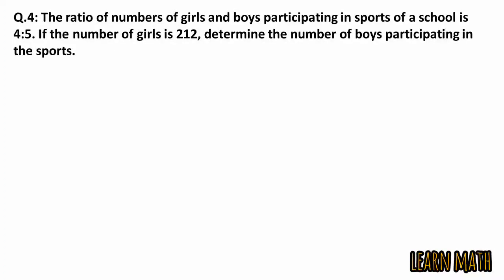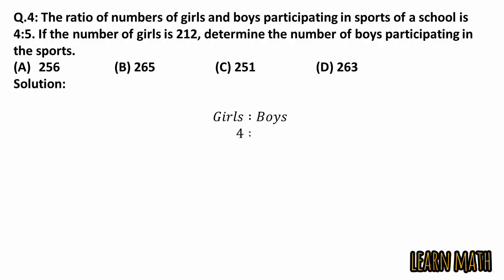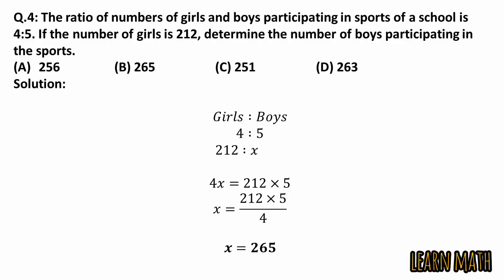The fourth question is: the ratio of numbers of girls to boys participating in sports of a school is 4:5. If the number of girls is 212, determine the number of boys participating in the sports. These are the 4 options. Setting up the proportion: girls/boys = 4/5, with girls = 212 and boys = X. Cross-multiplying: 4X = 212 × 5. Dividing both sides by 4 gives X = 265. The correct option is option B.